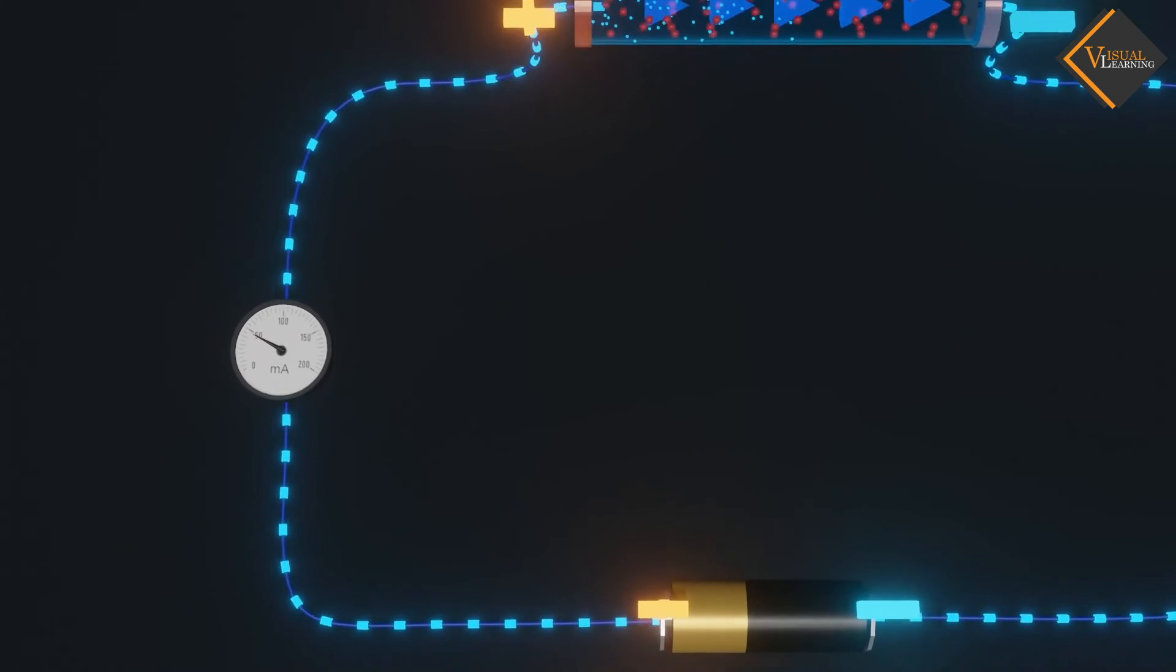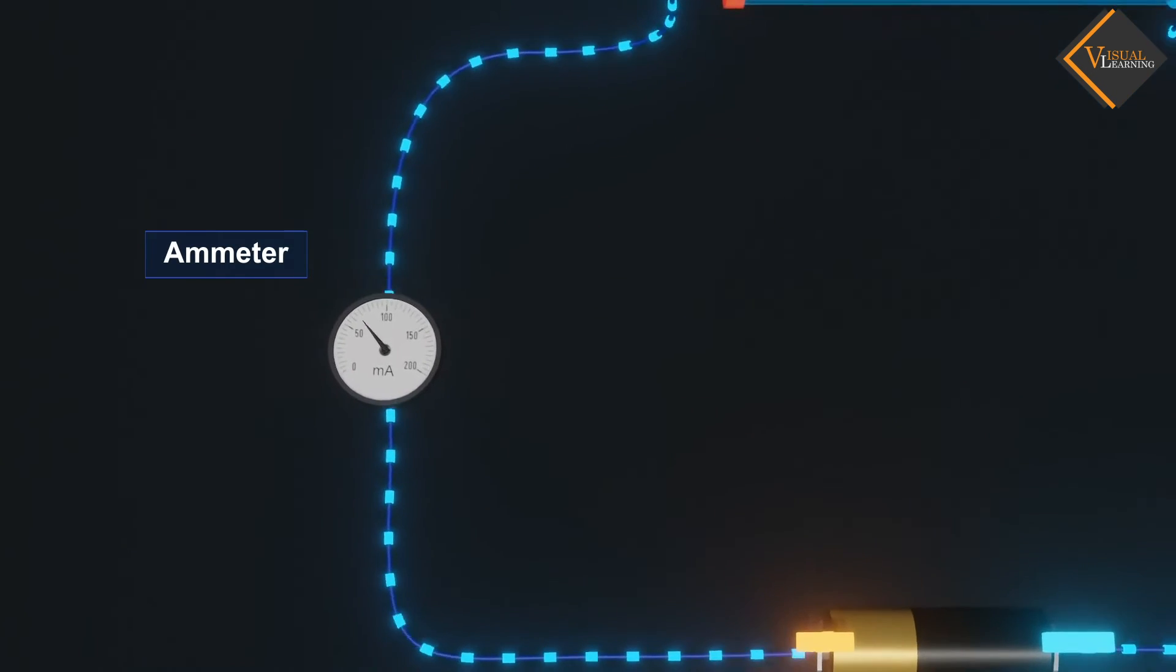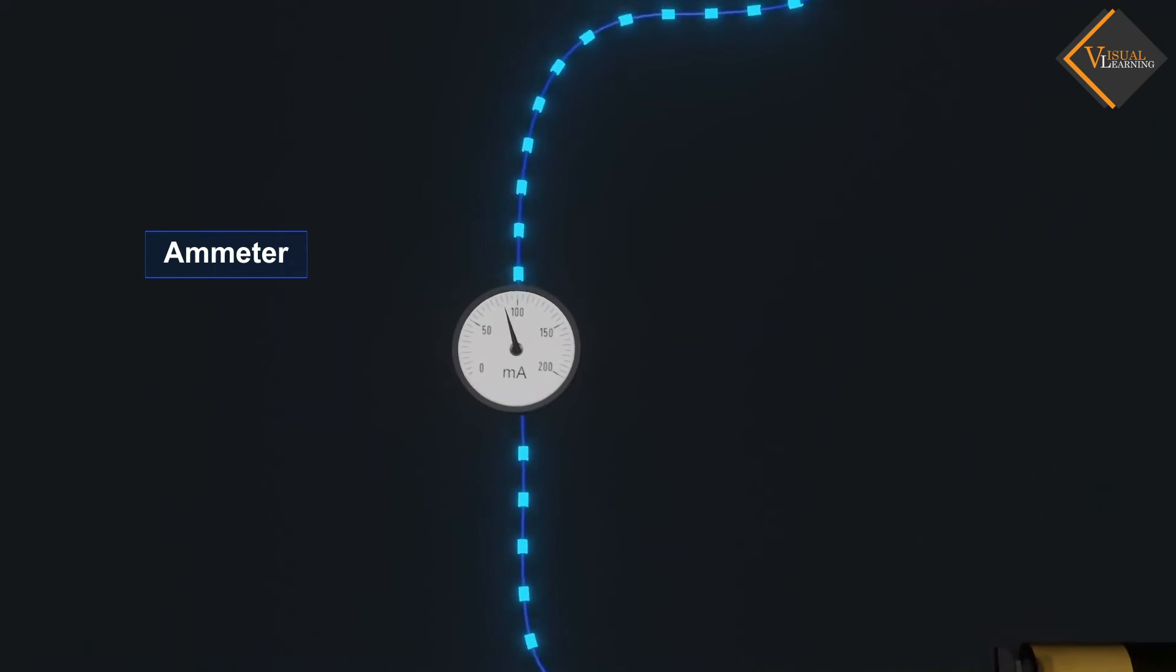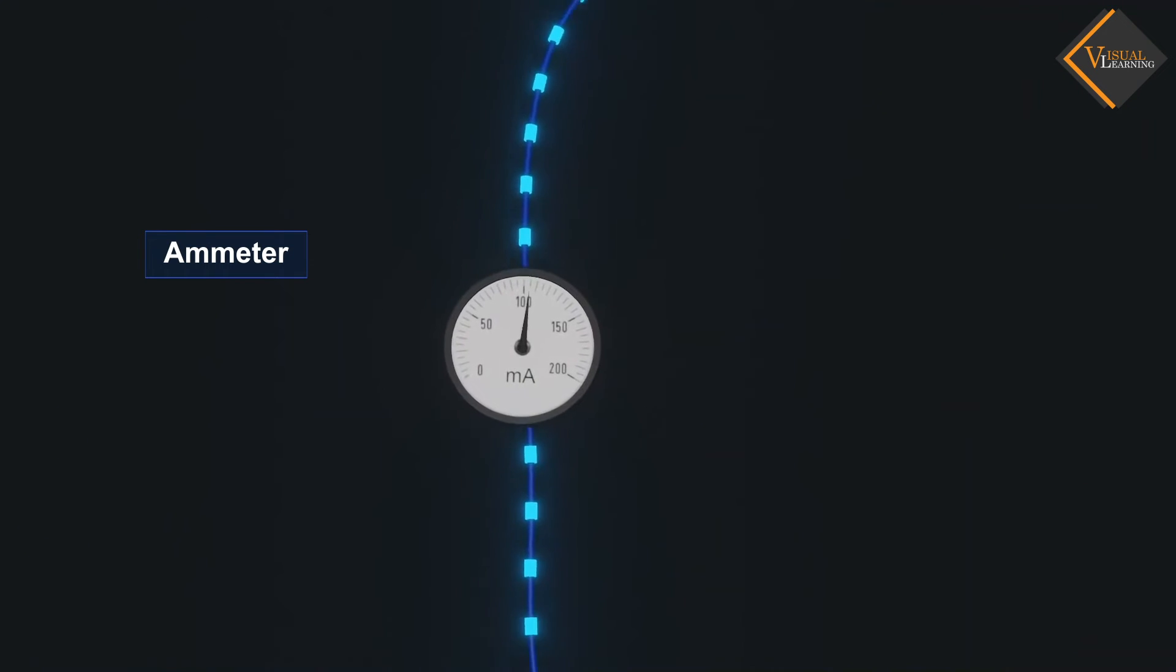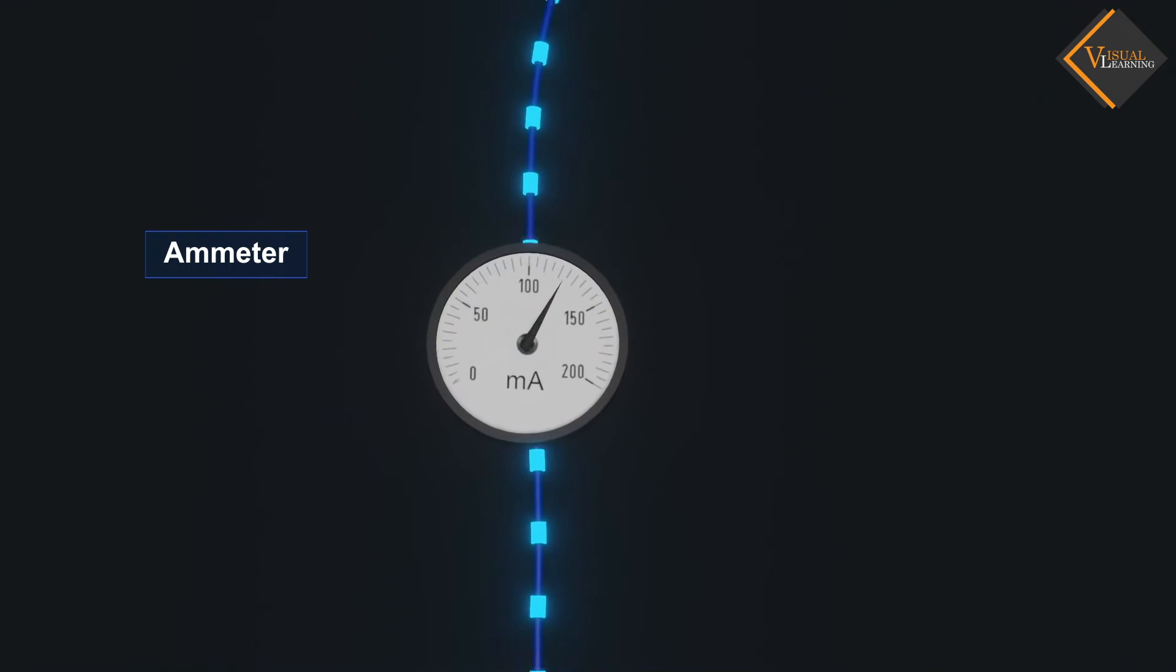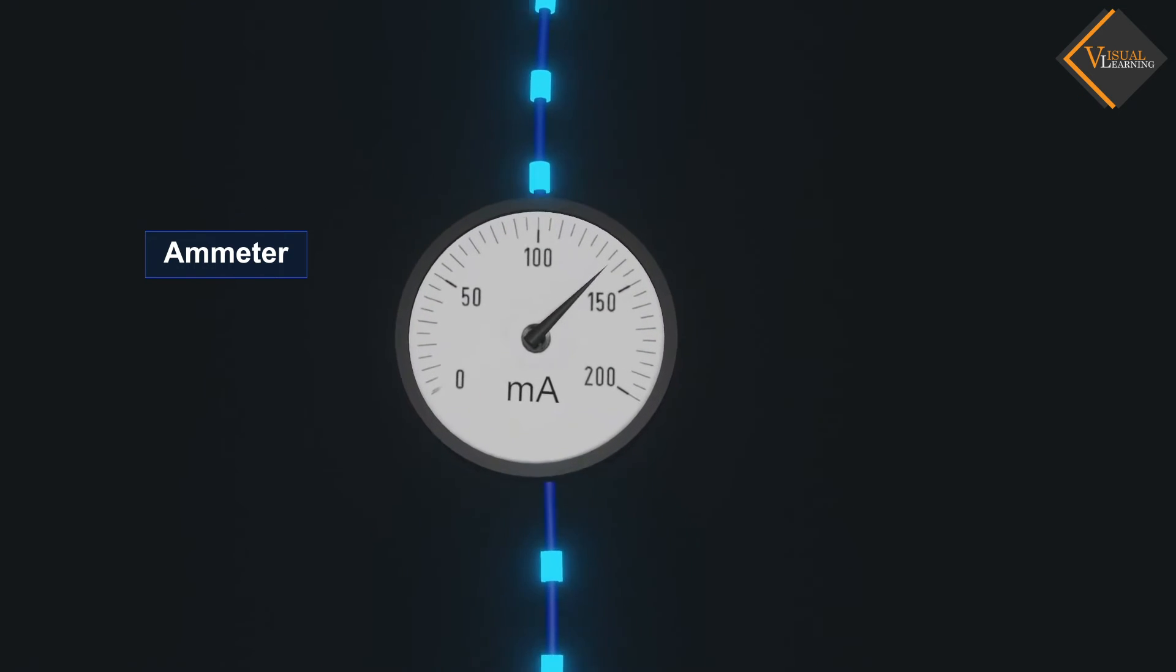An instrument called ammeter measures electric current in a circuit. It is always connected in series in a circuit through which the current is to be measured.